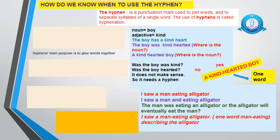The problem that most students — and sometimes adults — face is when to use the hyphen. So first of all, let's see what a hyphen actually is. It's a punctuation mark — a little line that's used to join words, and in other cases to separate syllables of a single word. But here, for compound adjectives, we're using it to join words together. Its main purpose, shall we say, is to glue words together.